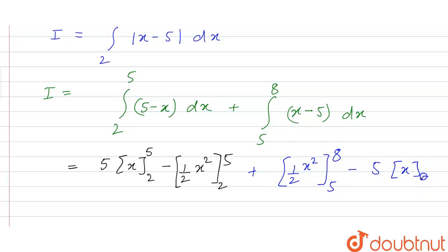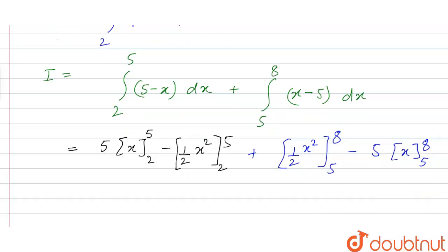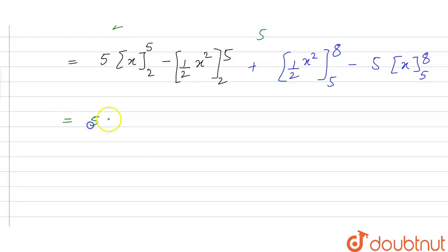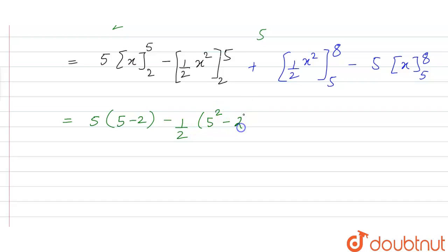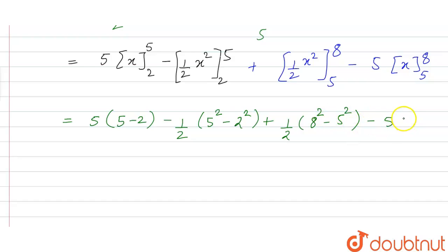On solving, we have 5 into (5 minus 2) from the first part, minus taking 1/2 common, we get (5² minus 2²), that is (8² minus 5²) which is 8² minus 5².